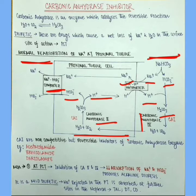Now carbonic anhydrase are non-competitive but reversible inhibitors of carbonic anhydrase enzyme. Generally all non-competitive inhibitors are irreversible but here it is important to note that it is a reversible phenomenon. Examples of carbonic anhydrase inhibitors include acetazolamide, drinzolamide and darzolamide.